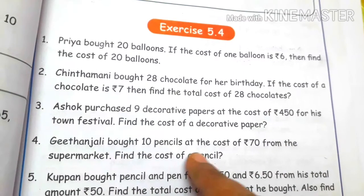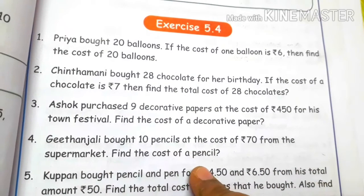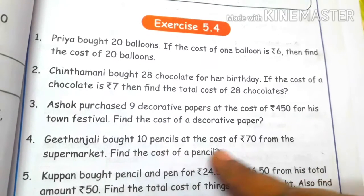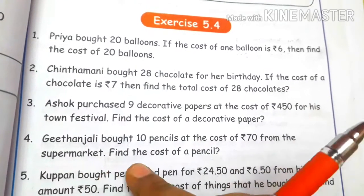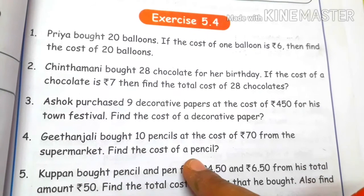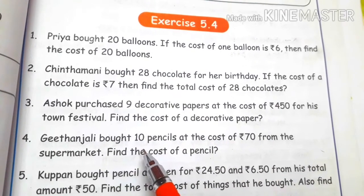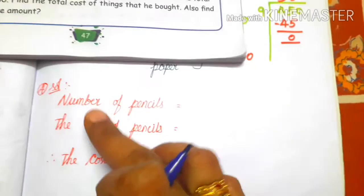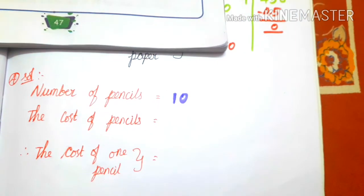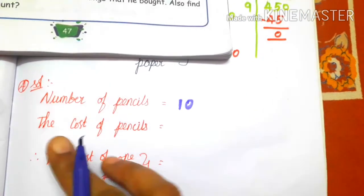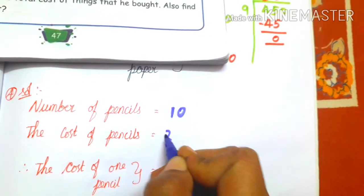Geetangeli bought 10 pencils at the cost of rupees 70 from the supermarket. Find the cost of one pencil. If you do 70 divided by 10, you will get the cost of one pencil. The cost of 10 pencils is 70 rupees.